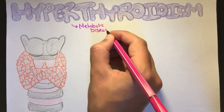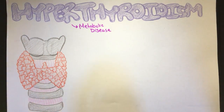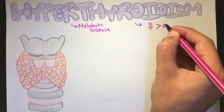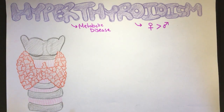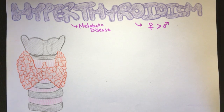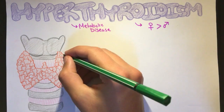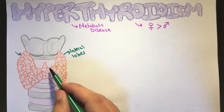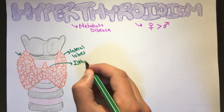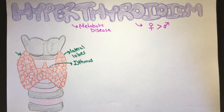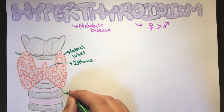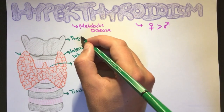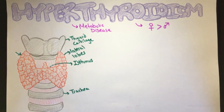Hyperthyroidism is a metabolic disease that occurs in the thyroid gland. It is more commonly associated with females. Before discussing the actual disease, I'm going to discuss the normal anatomy and physiology of the thyroid gland. The thyroid gland, colored in red here, consists of two lateral lobes connected by an isthmus, which are located anterior and below the trachea and thyroid cartilage.